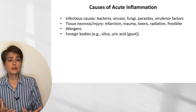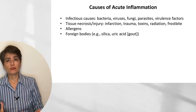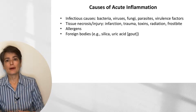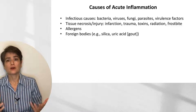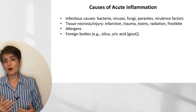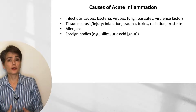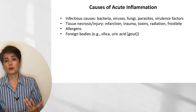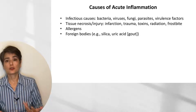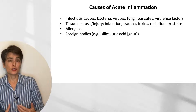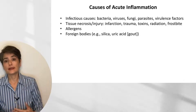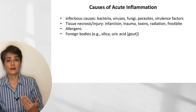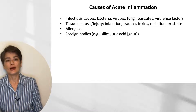When you mention acute inflammation, you probably think immediately about infectious causes — bacteria, viruses, fungi, etc. But there are a lot of other causes. Tissue necrosis and injury, for example from infarction, trauma, or toxins; allergens can cause acute inflammation; and foreign bodies, such as silica in the lungs or uric acid in gout.